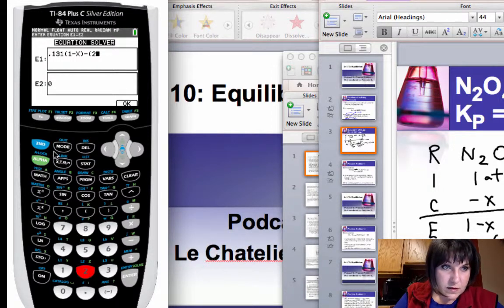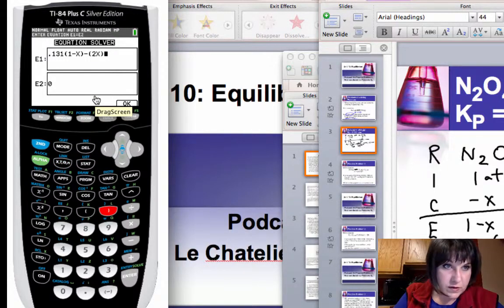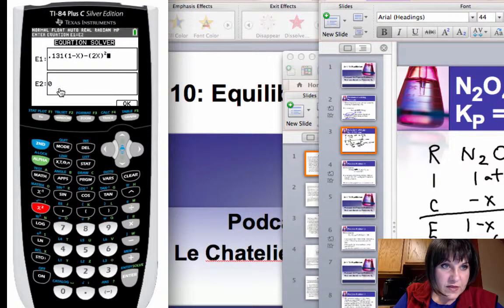Quantity 2x squared, right? I mistyped that earlier when I wrote it on the other side. The 2x is all squared, not just the x. And then that's set equal to 0.